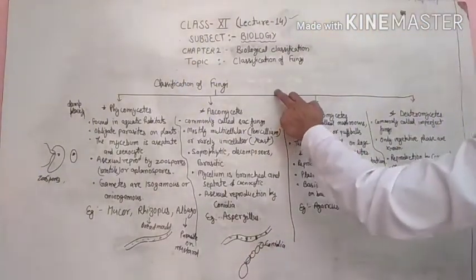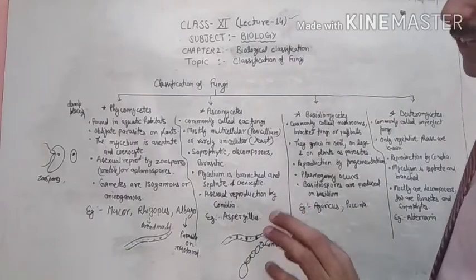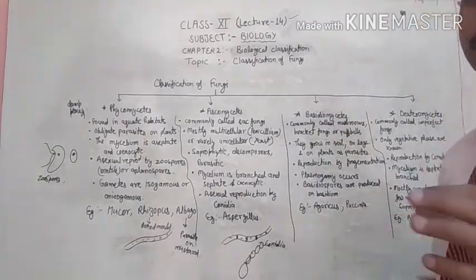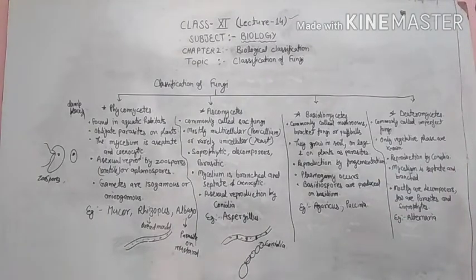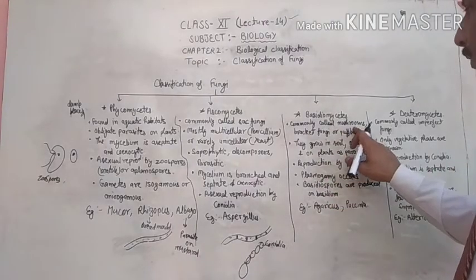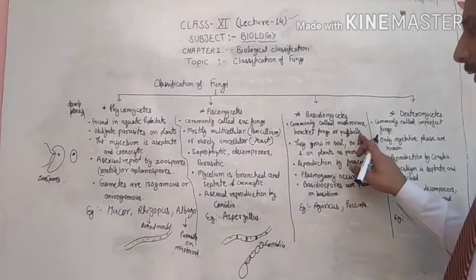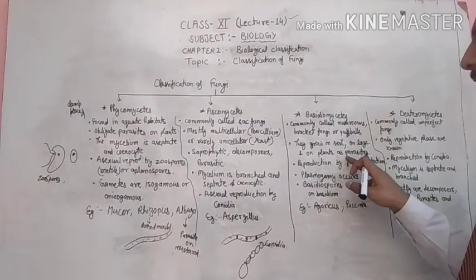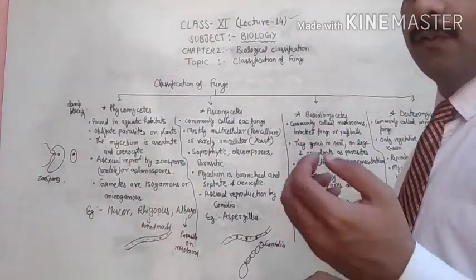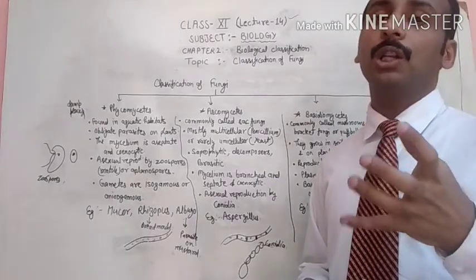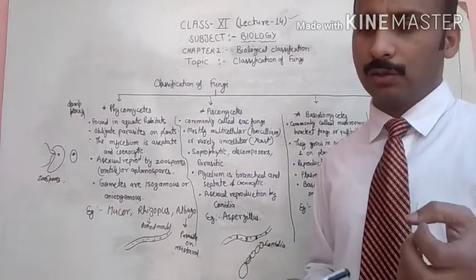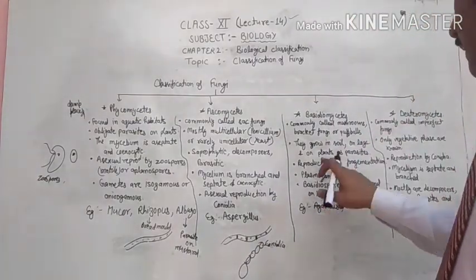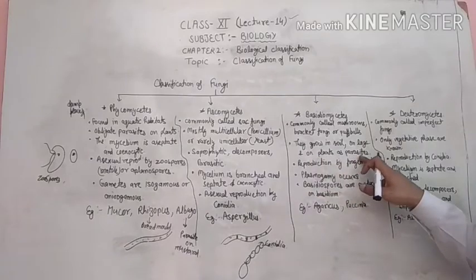The next group of kingdom Fungi is Basidiomycetes. Fungi belonging to this group are commonly called mushrooms, bracket fungi, or puff balls. They grow in soil, on logs — meaning large pieces of wood — and on plants as parasites.